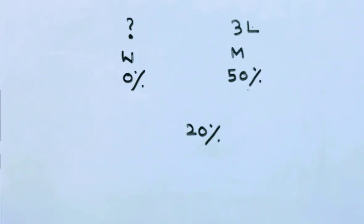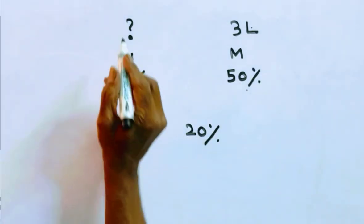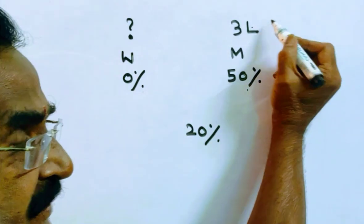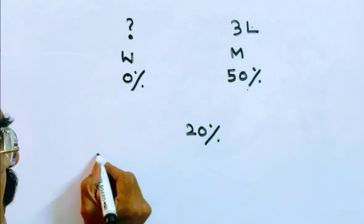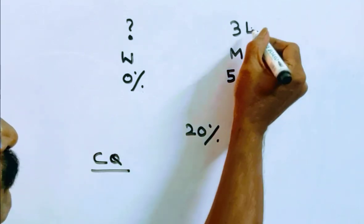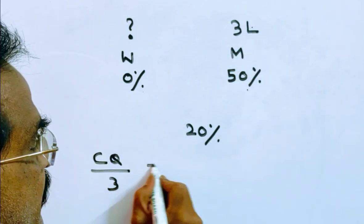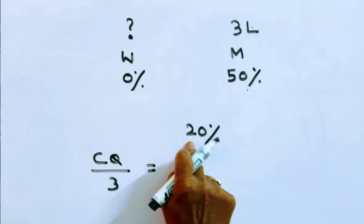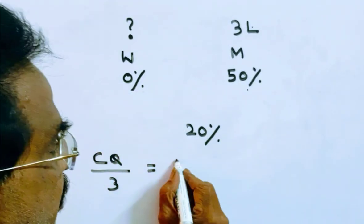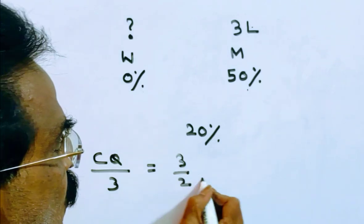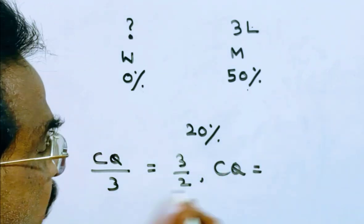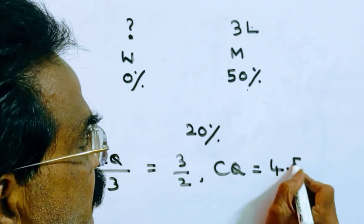By applying the rule of allegation, we get the quantities ratio. The cheaper quantity is what we need to find; the dearer quantity is given as 3 litres. Cheaper quantity divided by dearer quantity (3 litres) equals (30 minus 20) by (20 minus 0), which gives 30 by 20, simplifying to 3 by 2. So the cheaper quantity equals 9 by 2, which is 4.5 litres.